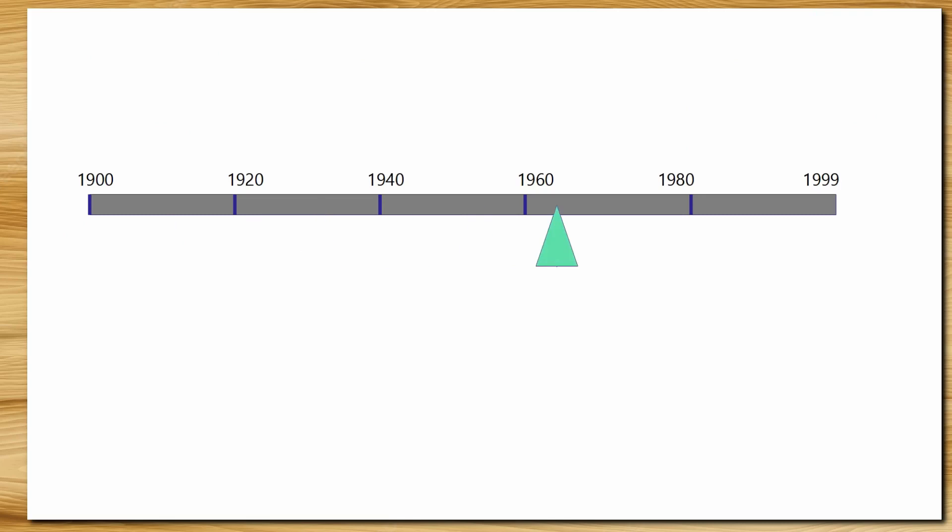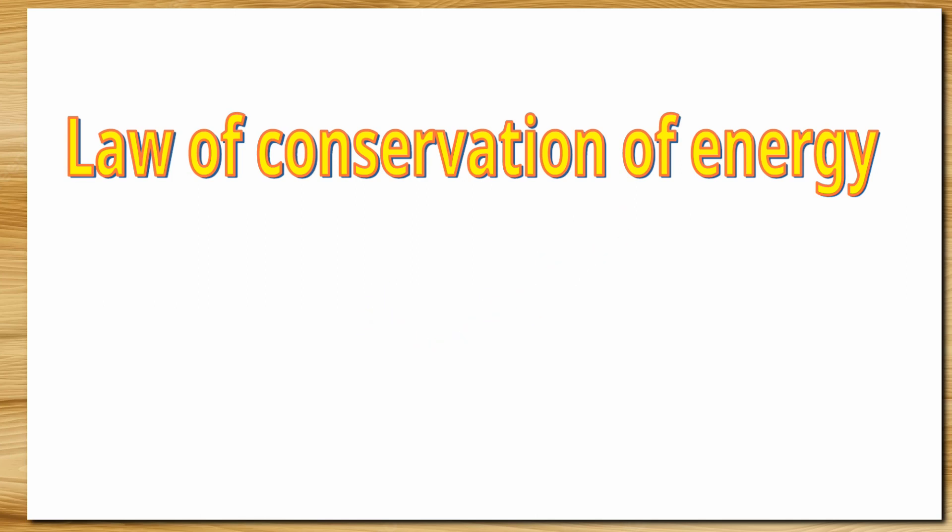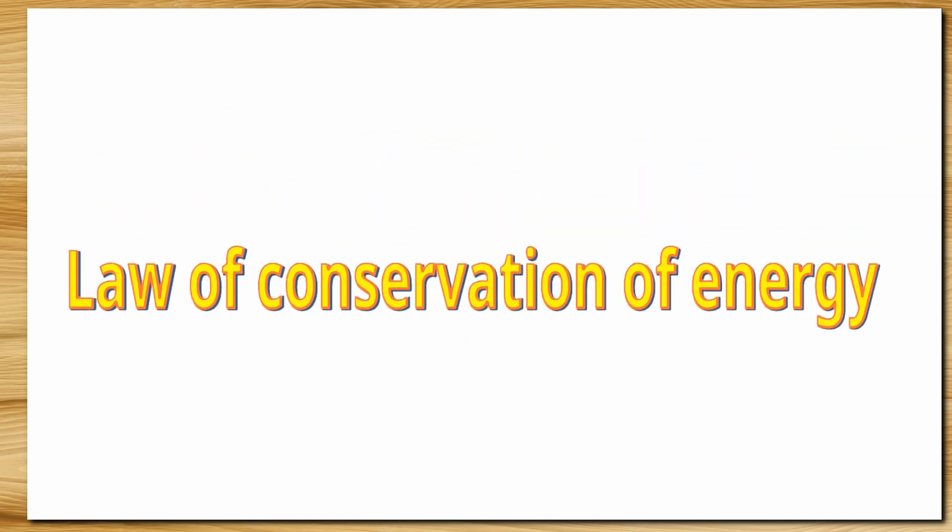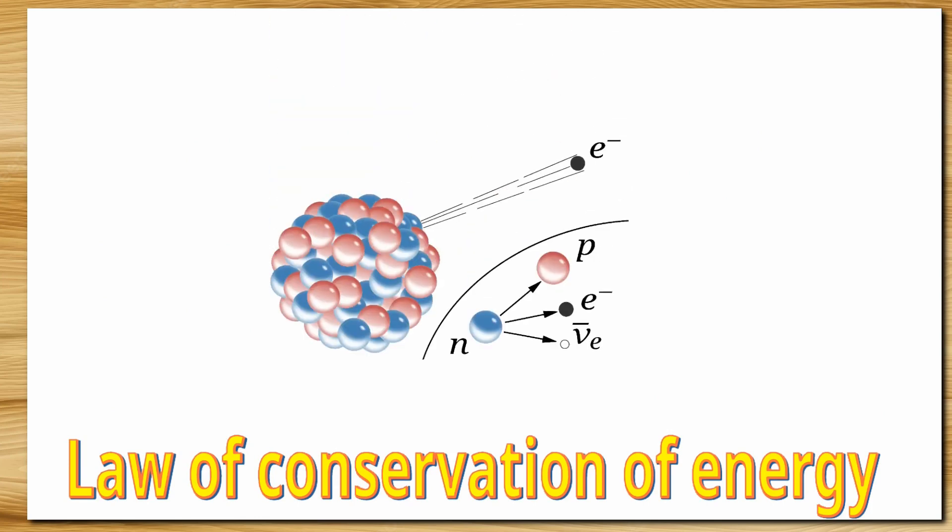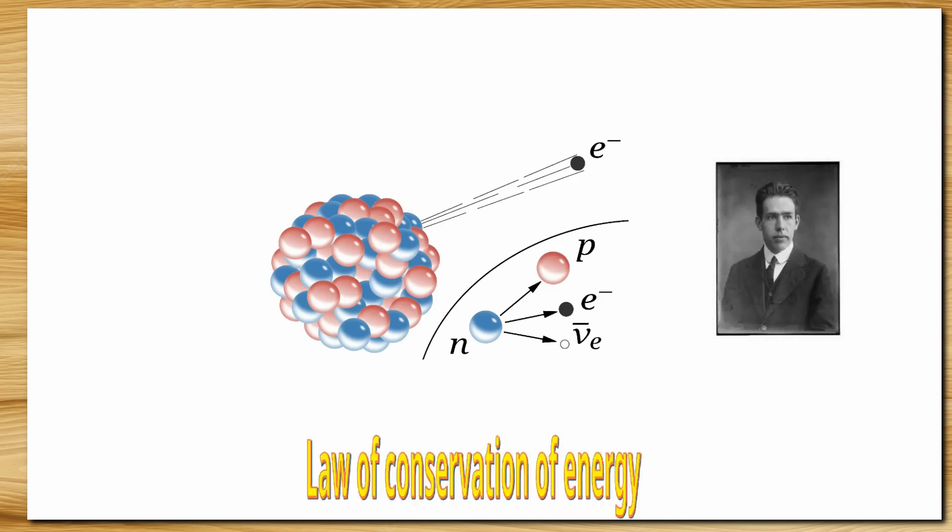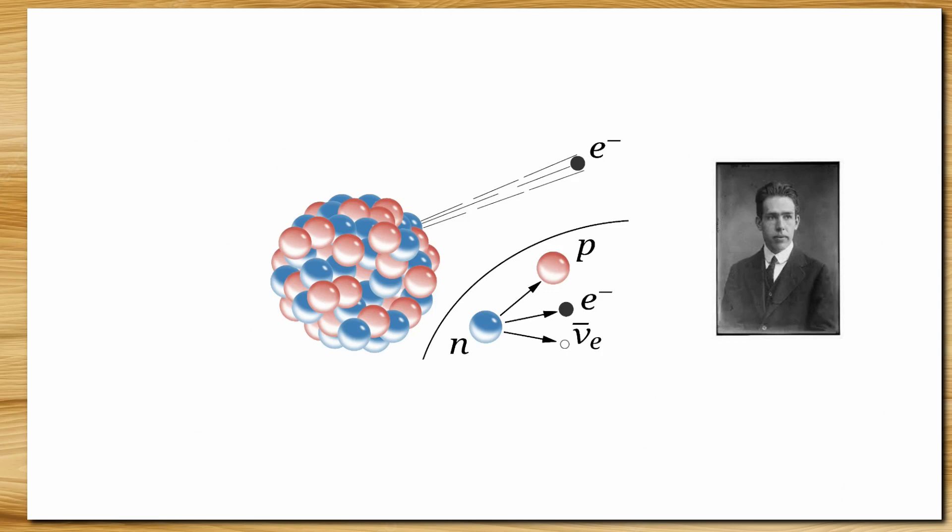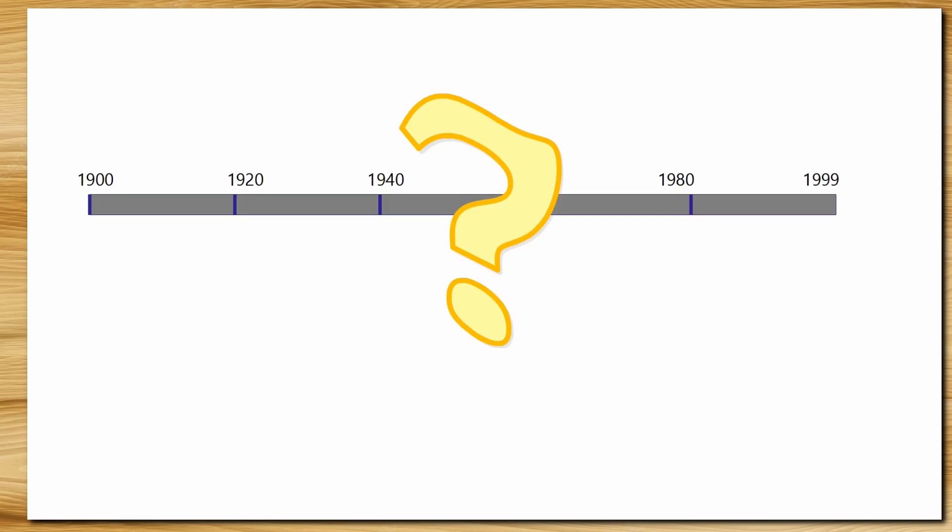But at some point in time in the 20th century, something bizarre was observed, which led a vast community of physicists to believe that the energy conservation law is violated. It was related to beta decay in radioactivity. The problem was so serious that even famous physicist Niels Bohr was ready to abandon the principle of conservation of energy. But what actually happened? Let's jump into it.